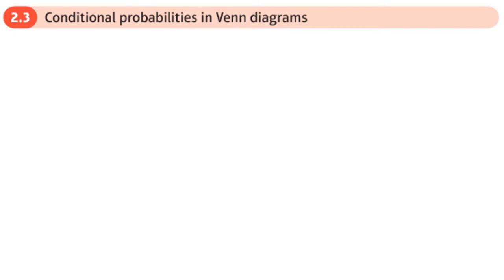This is the third section on chapter 2 from the Applied Year 2 book, which is on conditional probability.